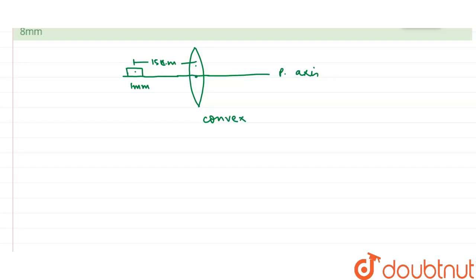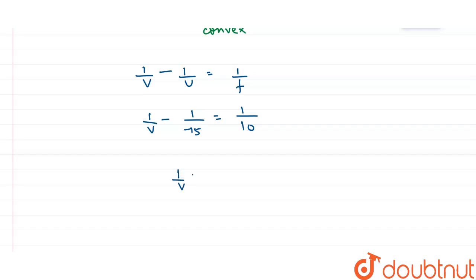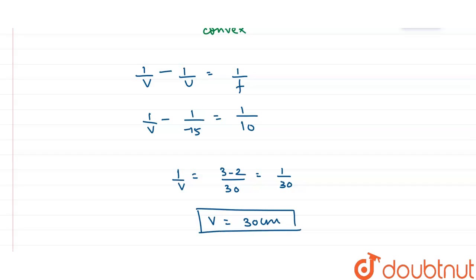We know the lens formula is given by 1/v minus 1/u equals 1/f, where v is the distance of the image from the lens, u is the distance of the object, and f is the focal length. Substituting: 1/v minus 1/(−15) equals 1/10. Solving, 1/v equals (3 minus 2)/30, which equals 1/30. So v equals 30 cm.